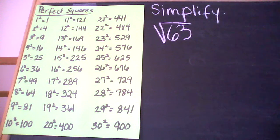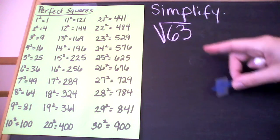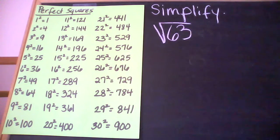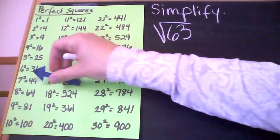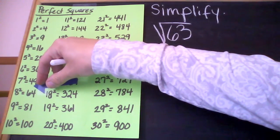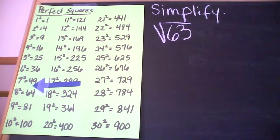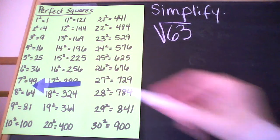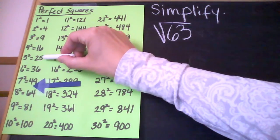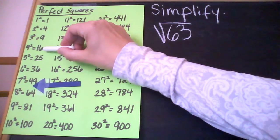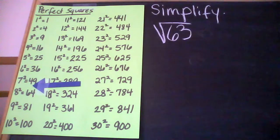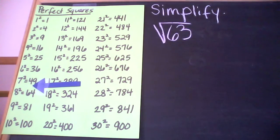I'm going to first find where 63 falls on this list. It falls between 49 and 64. So I'm going to check and see which of these numbers — 49, 36, 25, 16, 9, 4 — which one is the biggest one that could divide into 63 a whole number of times.